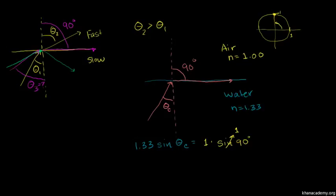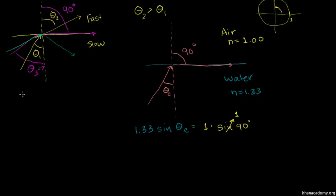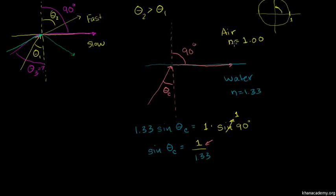So if we want to figure this out, we can divide both sides by 1.33. We get the sine of our critical angle is equal to 1 over 1.33. To generalize it: the numerator is the index of refraction of the faster medium, and the denominator is the index of refraction of the slower medium — we'll call that n_s. And because you're always finding the sine of 90 degrees, this always simplifies to 1 when finding the critical angle.